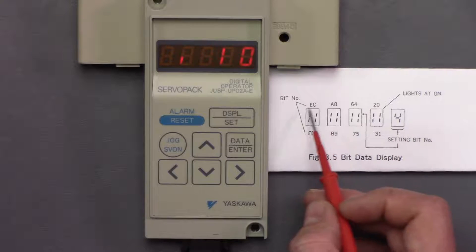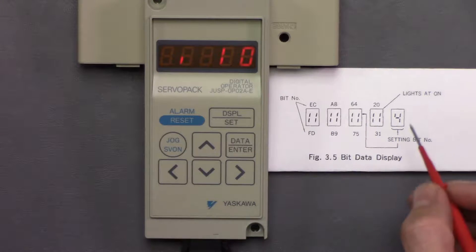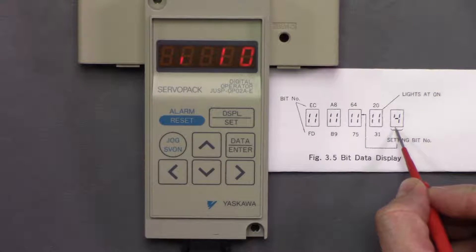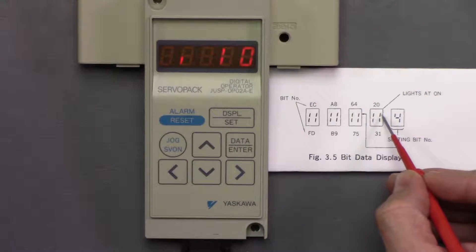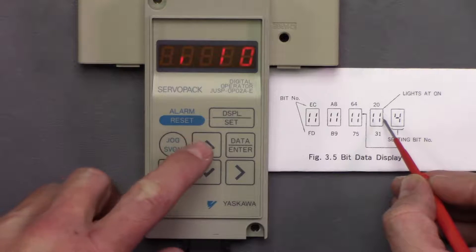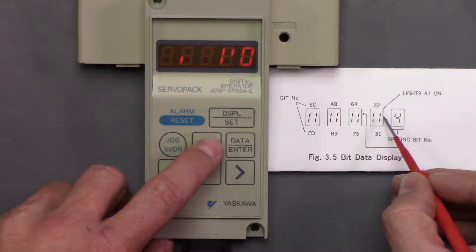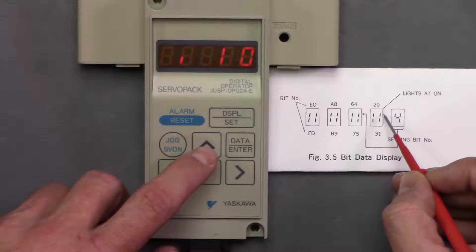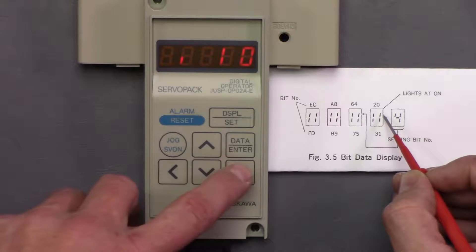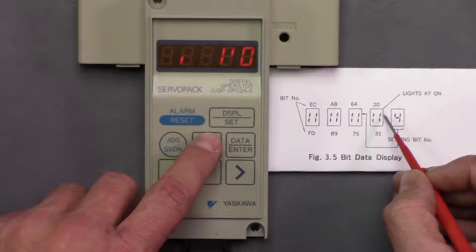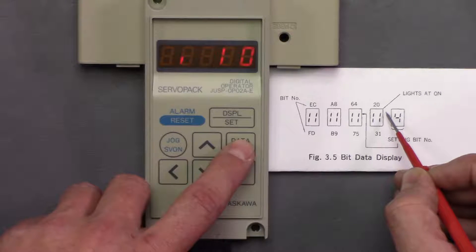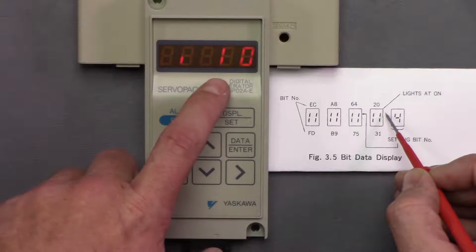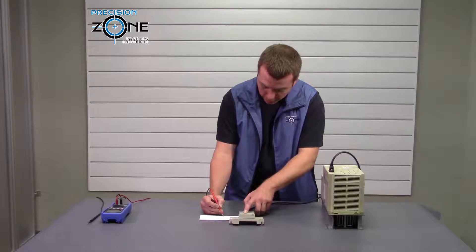So here, I'm referencing this chart. This is the bit setting number, and currently we're at bit setting zero, and that's referring to this bit right here. So I use the arrow keys to turn on and off that bit. If I were to hit data enter, that's going to save that bit either being turned on or off.